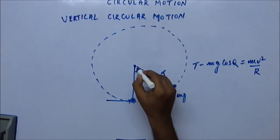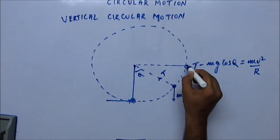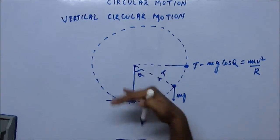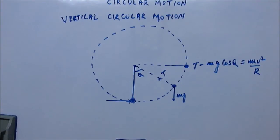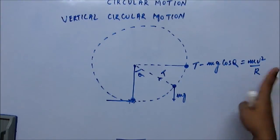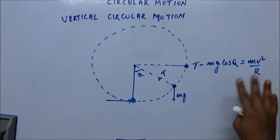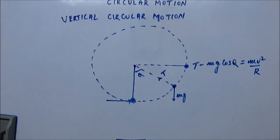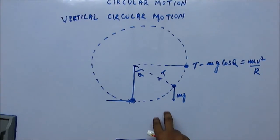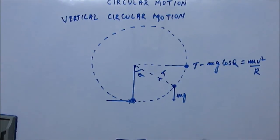When the bob is in the lower half of the circle, tension will never be zero. Because even if the velocity becomes zero — all kinetic energy converts to potential energy — then the right-hand side is zero and T equals mg·cos(theta). Tension is not going to be zero. This is an important result: in the lower half of the circle, tension cannot become zero.